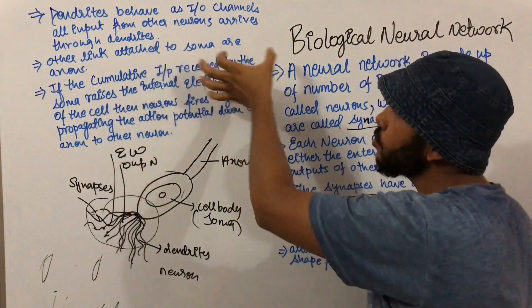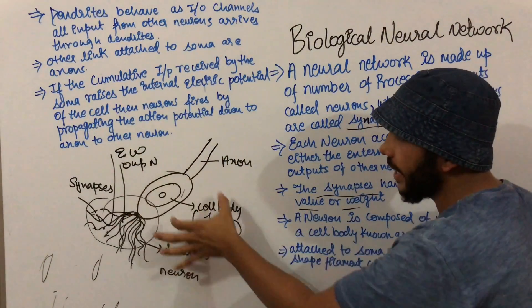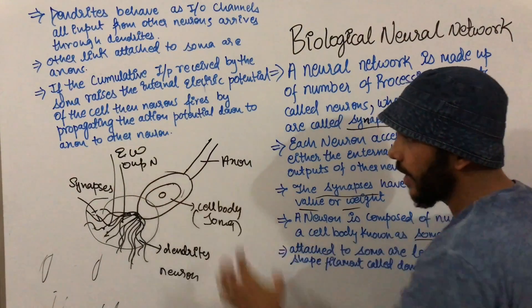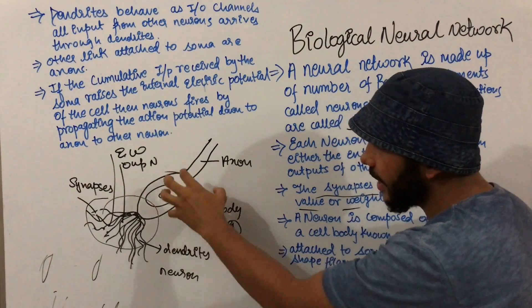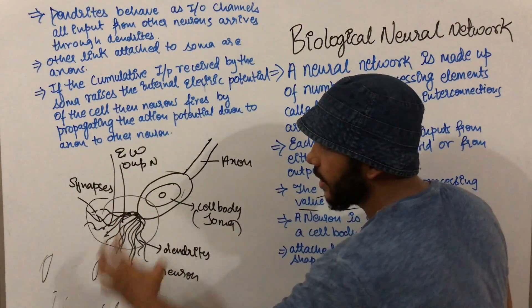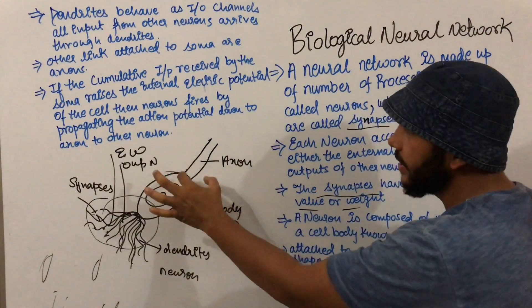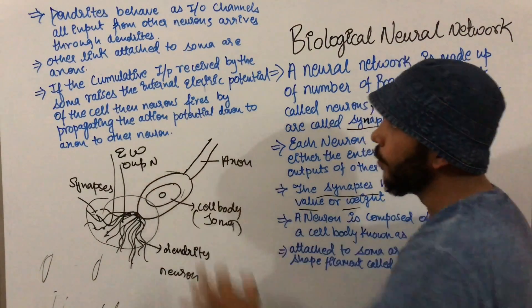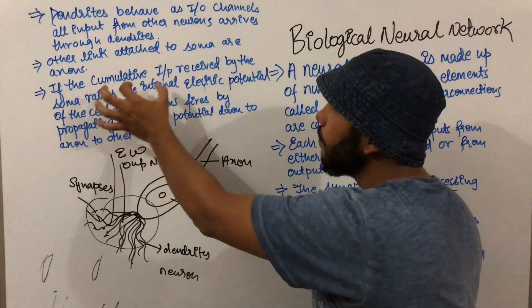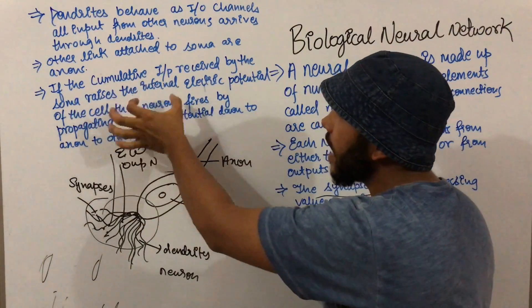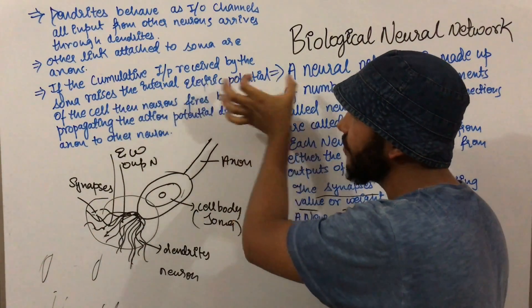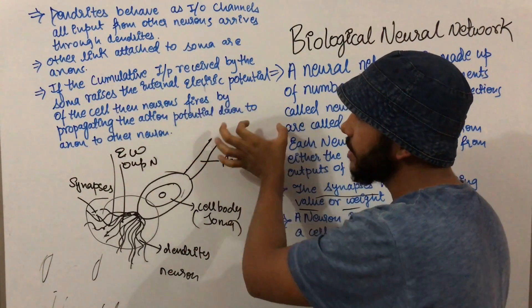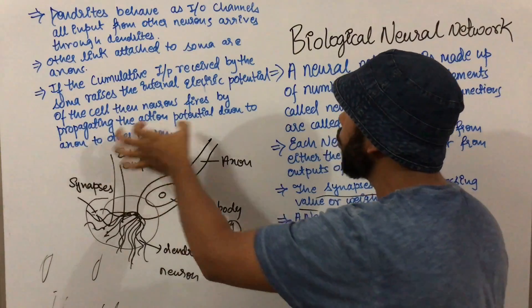The other link attached to the soma is the axon. The soma — that is the cell body of the neuron — is attached to two parts: first the dendrites, through which different inputs arrive, and second the axon. If the cumulative input received by the soma raises the internal electric potential of the cell, then the neuron fires by propagating the action potential down the axon to other neurons.